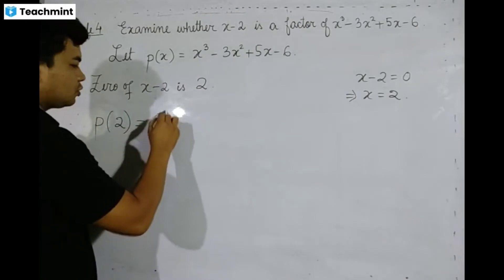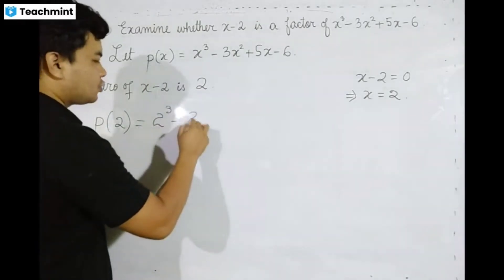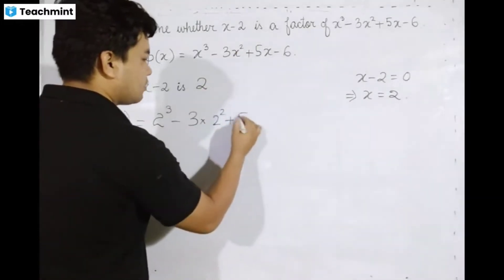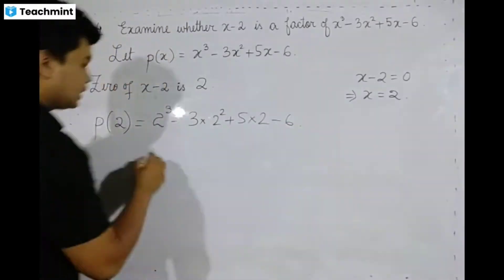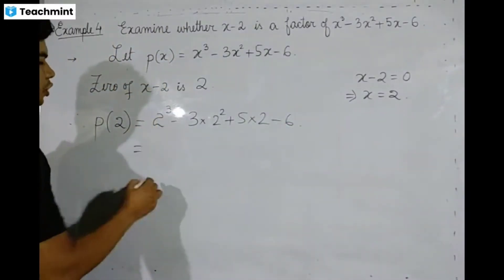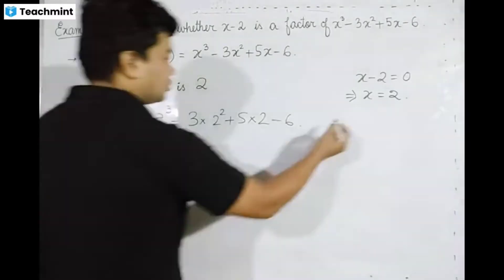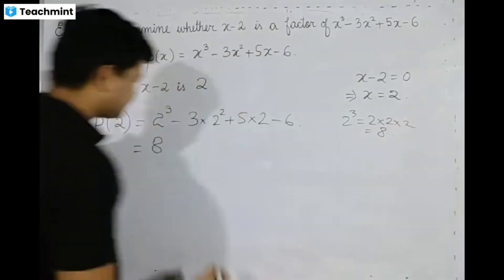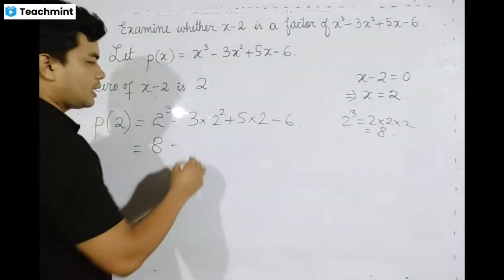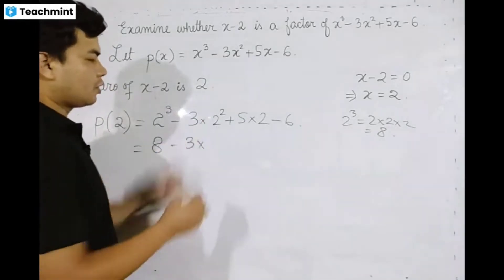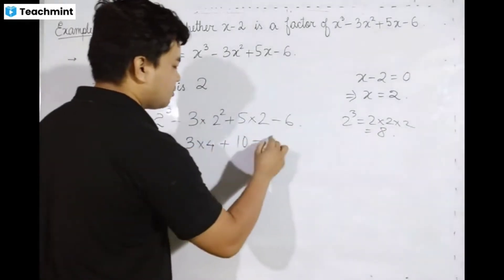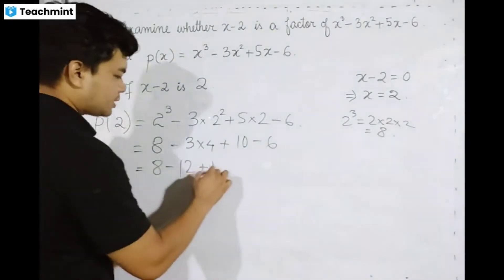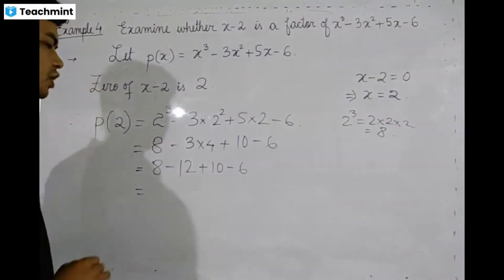p of 2 equals 2 cubed minus 2 squared plus 5 into 2 minus 6. That equals 8 minus 4 plus 10 minus 6.